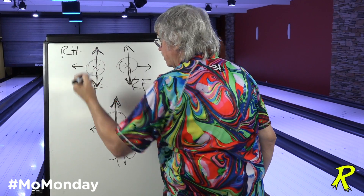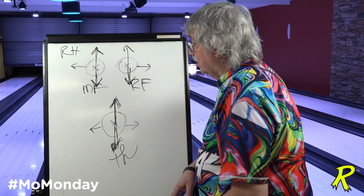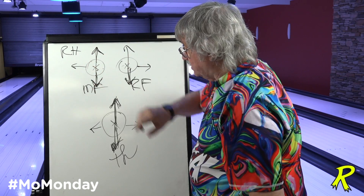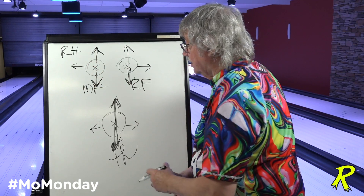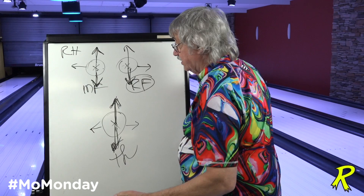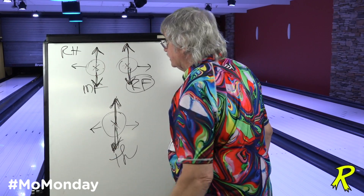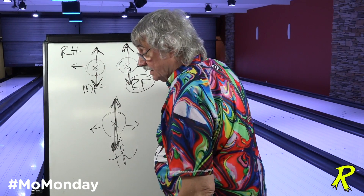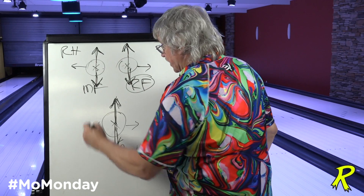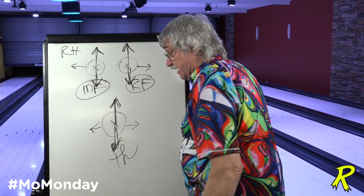If I take the middle finger and pitch it more away, I'm going to decrease the effectiveness of the middle finger, therefore making the person more ring finger dominant. Conversely, if I decrease the effectiveness of the ring finger, I'm making the person more middle finger dominant.